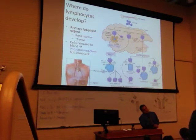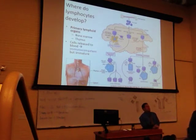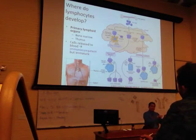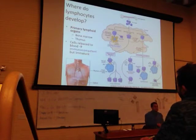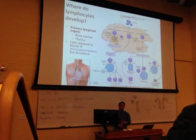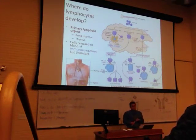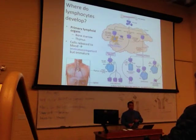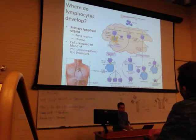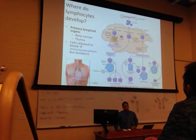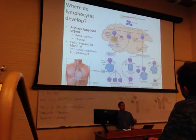Immunocompetent means they're ready to fight but may not be stimulated yet; mature means they're actively working and performing an immune function. Both CD4 and CD8 are T cells: CD4 are helper T cells, CD8 are cytotoxic T cells. Immunocompetent cells are armed and ready — they're just waiting for someone to say shoot.